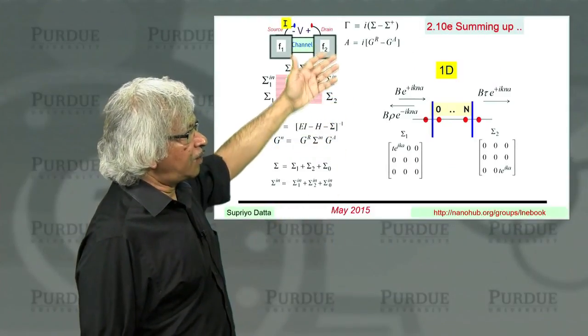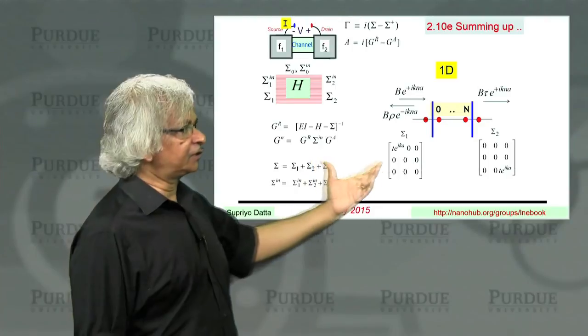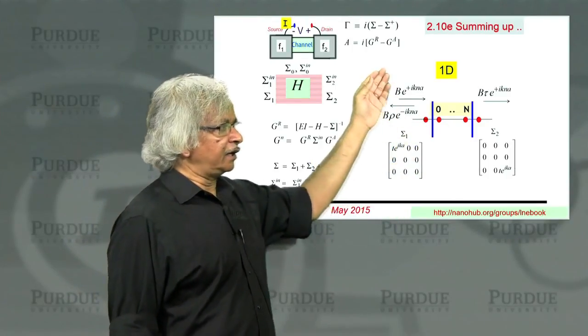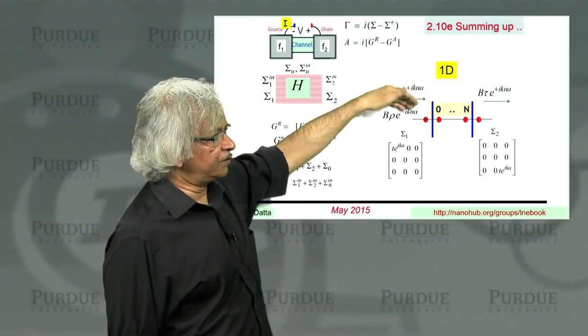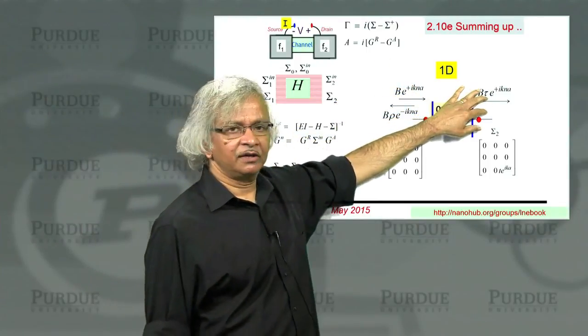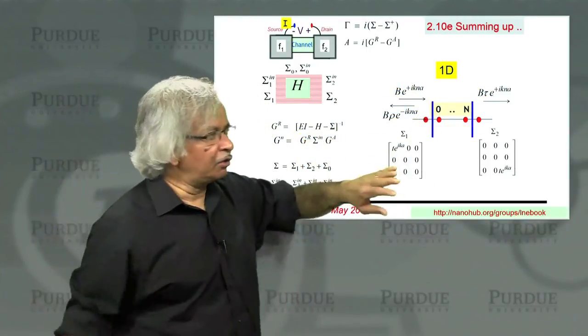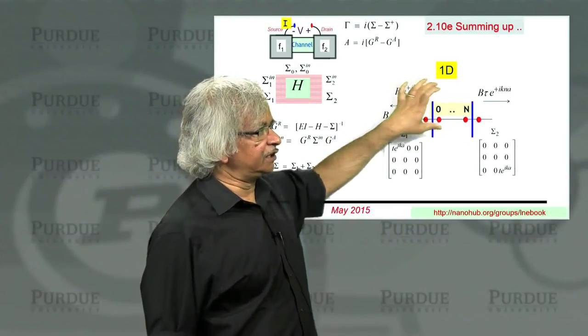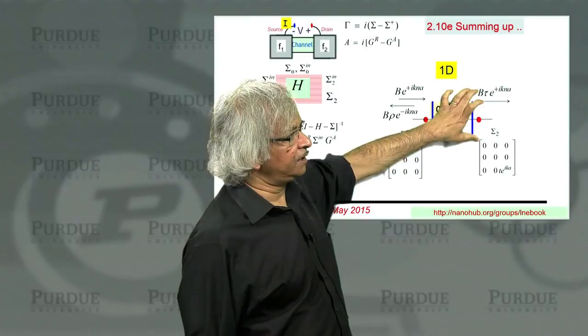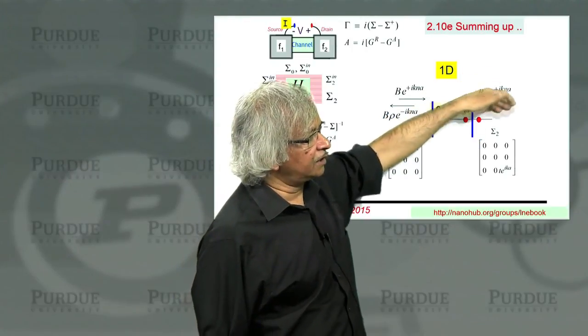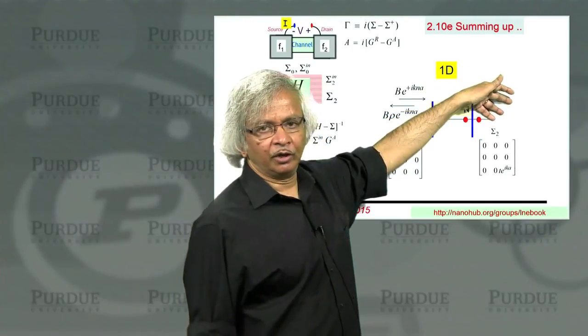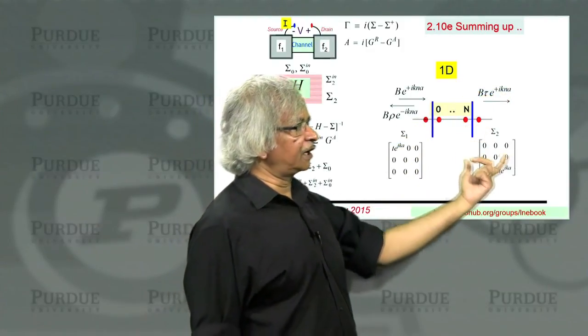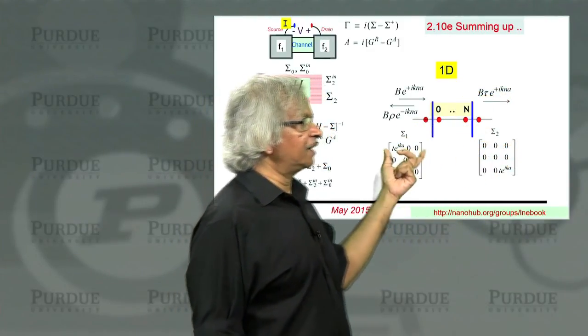In terms of how you obtain the sigma, we went through a 1D example. We took a case of a 1D wire and assumed this incident wave, a reflected wave, and a transmitted wave. And we showed how using simple arguments and applying these boundary conditions.